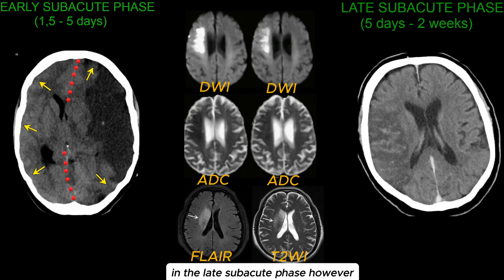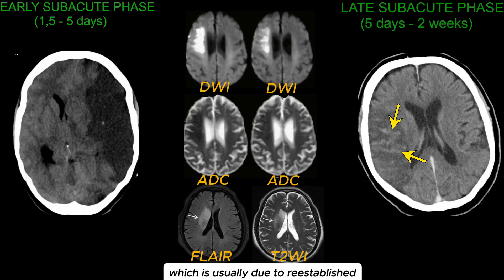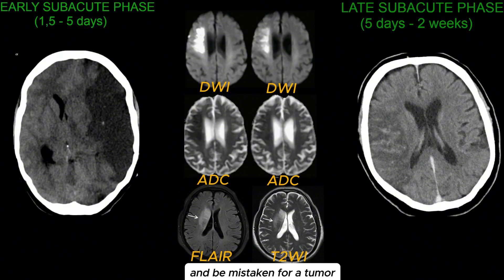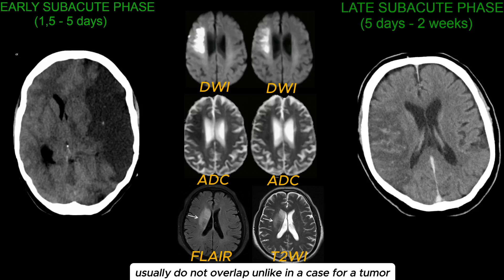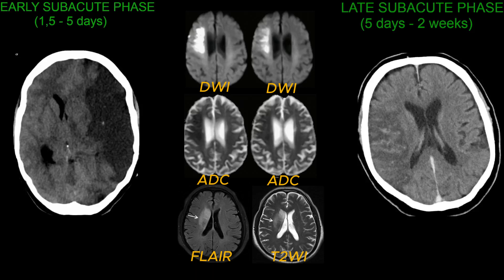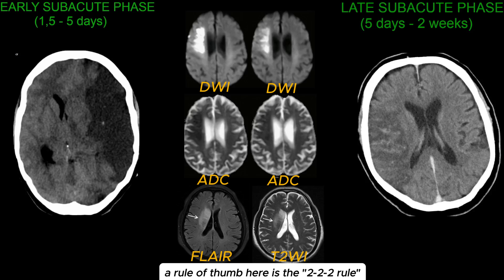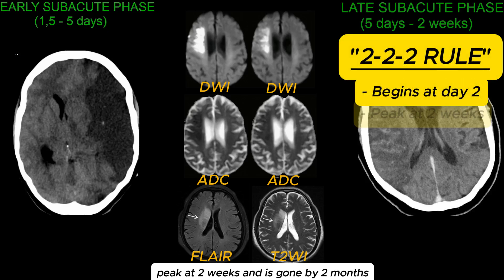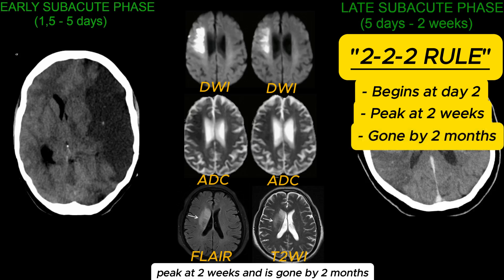In the late subacute phase, we start seeing gyral enhancement, which is usually due to re-established flow into the affected area with leptomeningeal collaterals and other new vessels. This enhancement may cause confusion and be mistaken for a tumor. Note however that the mass effect and enhancement usually do not overlap, unlike in the case of a tumor. A rule of thumb here is the 2-2-2 rule: enhancement may begin at day 2, peak at 2 weeks, and is gone by 2 months.